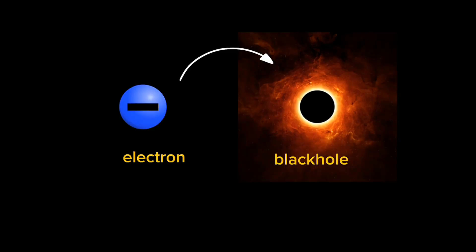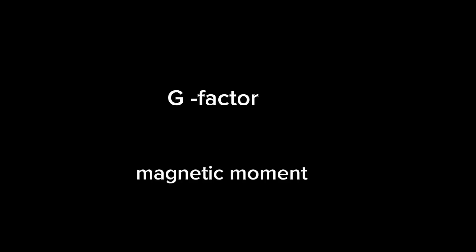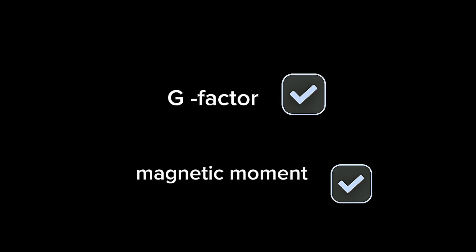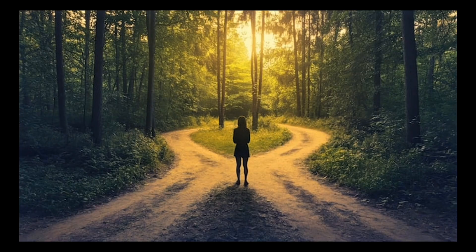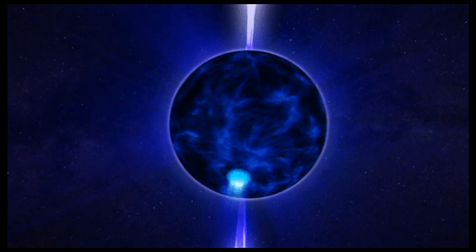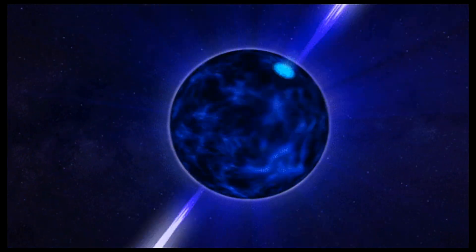This shows us that maybe the Kerr-Newman electron model is really incomplete. But the fact that it got some values exact means that the theory may be wrong, but the approach may be right, or there might be something like a singularity that might be present.